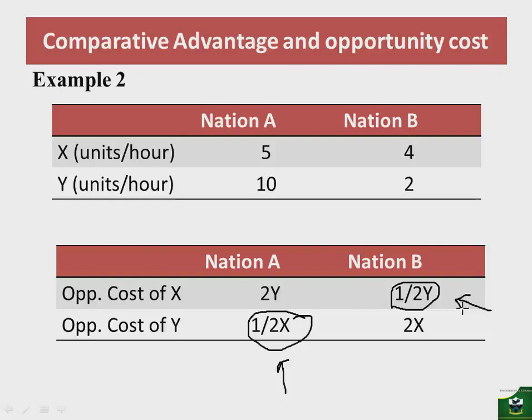Given that the output is produced, the two nations can gain by exchanging part of their output with the other nation for the commodity of their comparative disadvantage. Nation A will export part of its commodity Y output to nation B and import nation B's commodity X. Both nations will gain according to what the theory states.